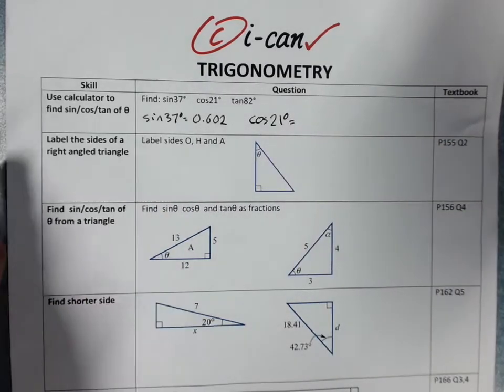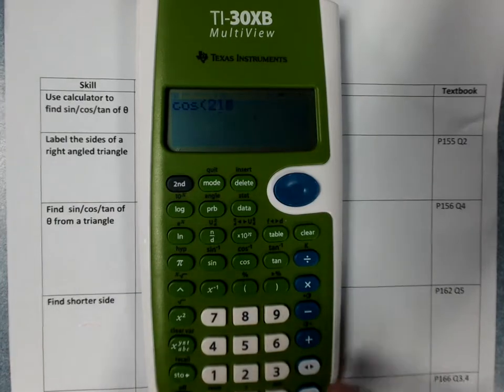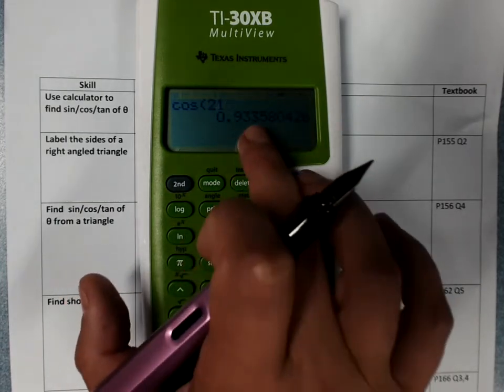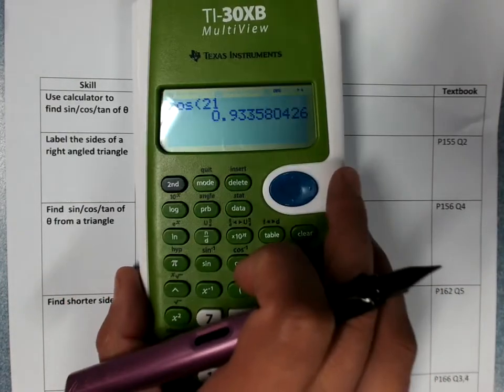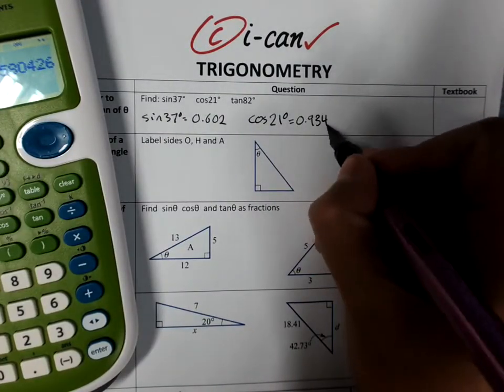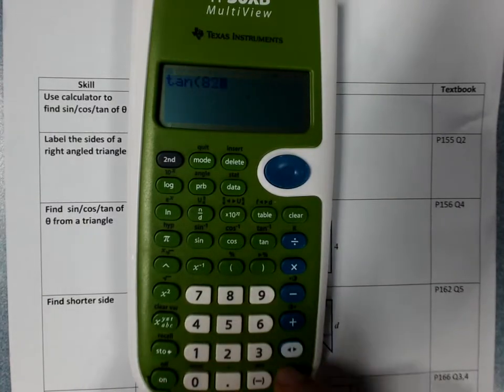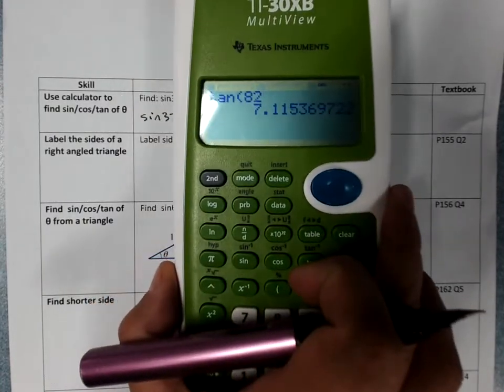You'll notice I'm saying what I'm finding. Cos of 21 degrees, 0.934 because I have to round. And tan of 82 degrees, 7.115.